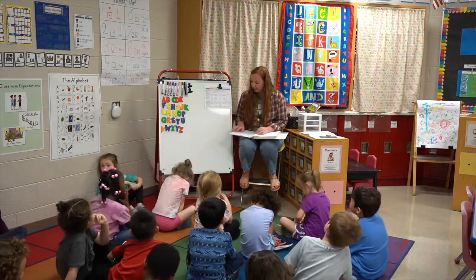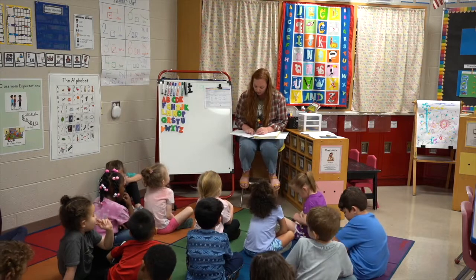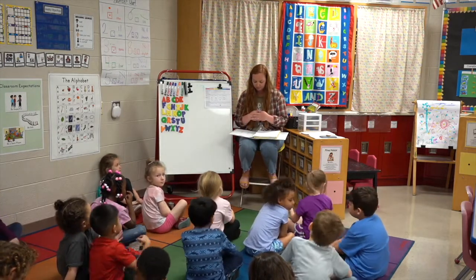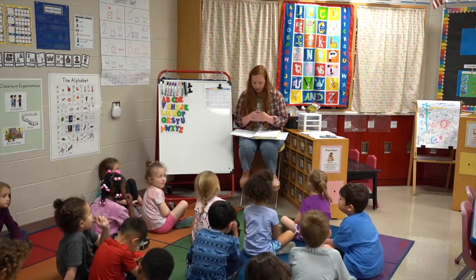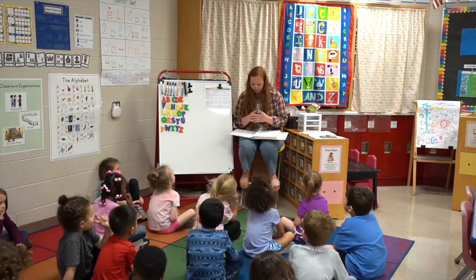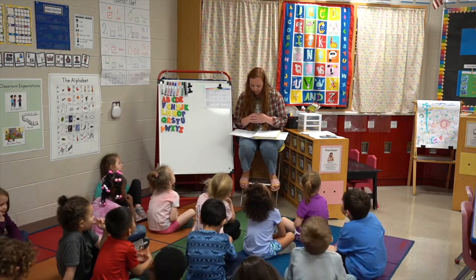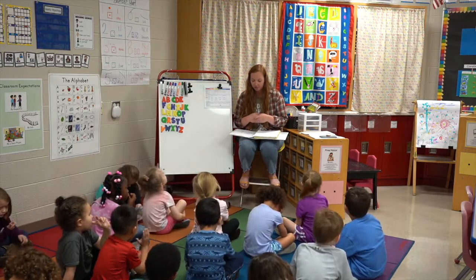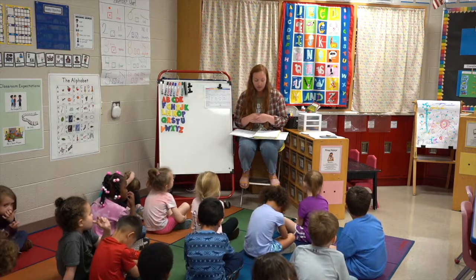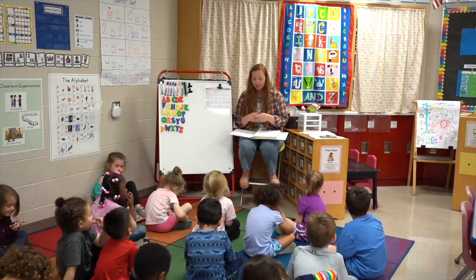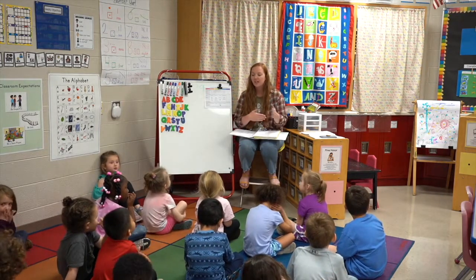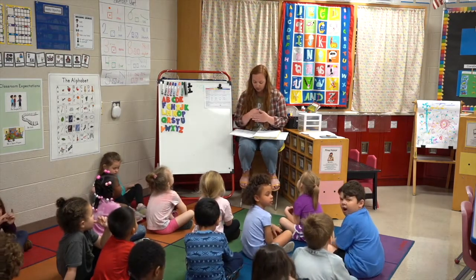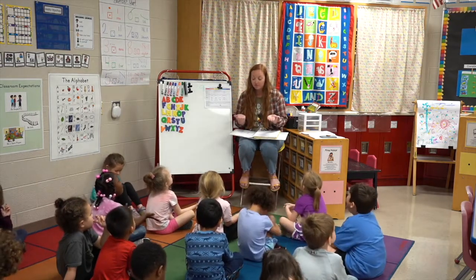Now we're going to delete syllables. All right, ready? Remember, we've only done this one a few times. I'm going to say the word, you're going to repeat, and then we're going to break it up. We're going to take a part away, and you're going to tell me what's left. The word is fellow. Fellow. What is left when you take away the O? Fell. Good.